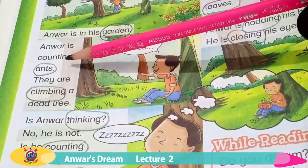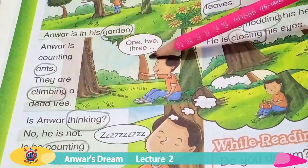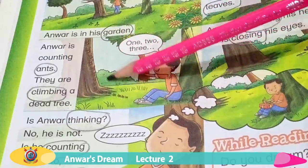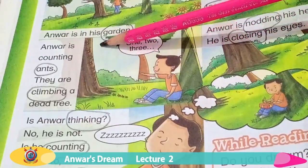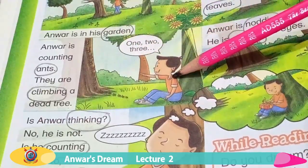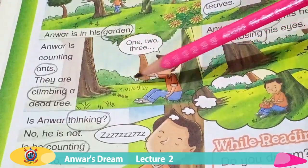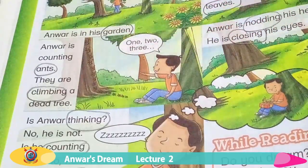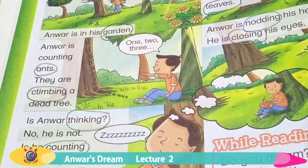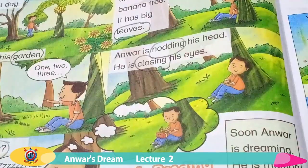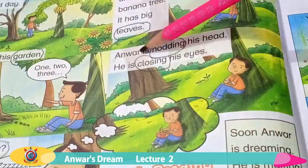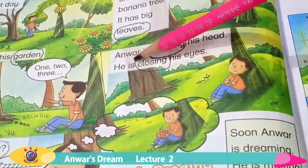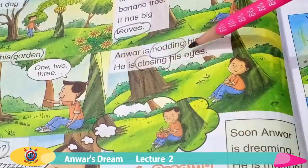Anwar is counting ants. They are climbing a dead tree. Can you see Anwar? He is counting ants. What is he doing next? Anwar is nodding his head. He is closing his eyes.